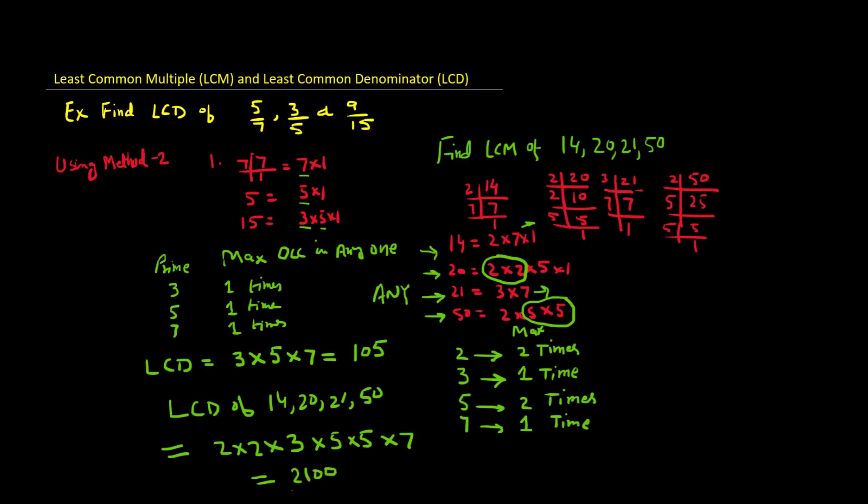So 2100 will be your answer. Use this method to find the LCD of reasonably large numbers like 14, 20, 21, and 50. But if the numbers are larger than these, then this process could be a lengthy one, so for those situations we have a third method.